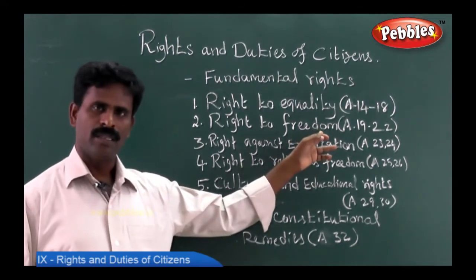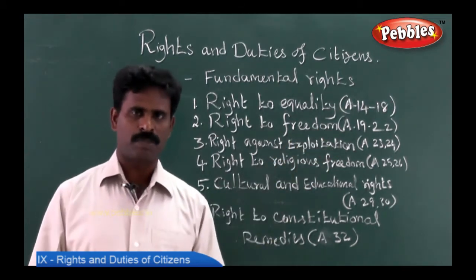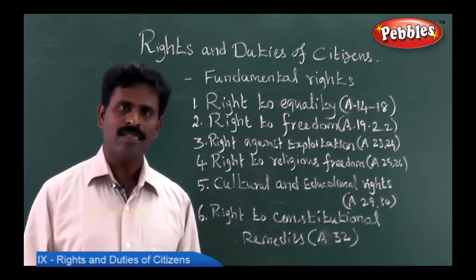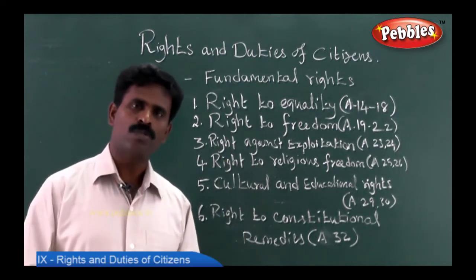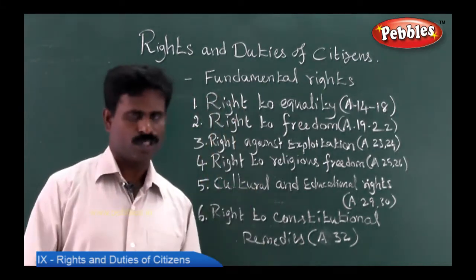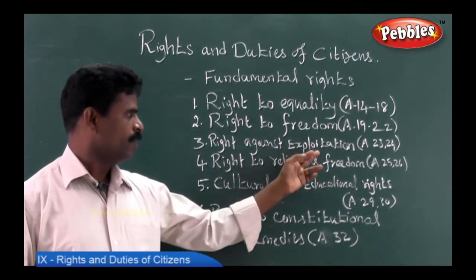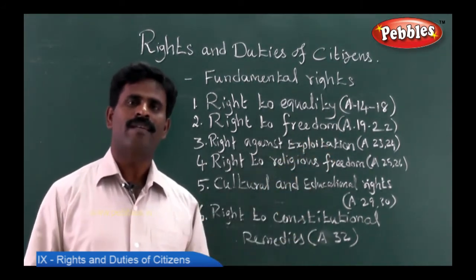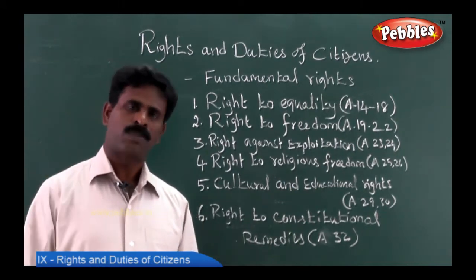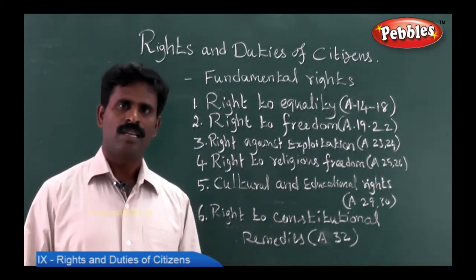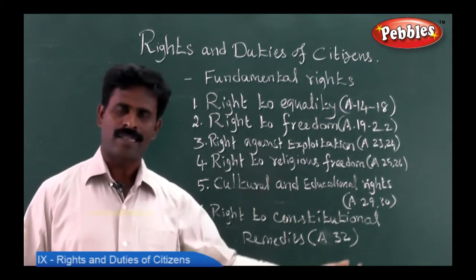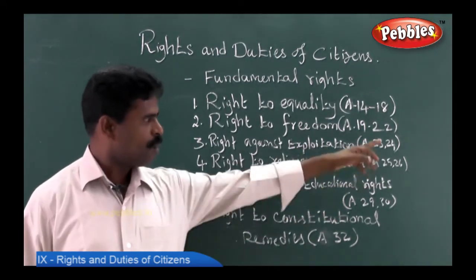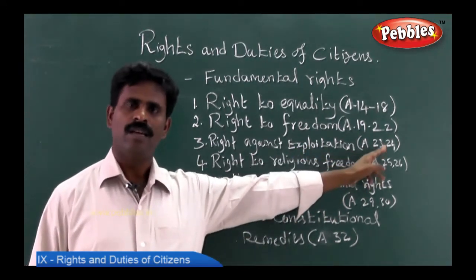Right to freedom refers to the freedom of speech, freedom of expression, freedom to own land, freedom to buy lands, and freedom to be as a person wants to be under the framework of the constitution. Right against exploitation: nobody is a slave in a democratic country. If a person exploits a citizen, the citizen has the right to file a case against their exploiter, which is called right against exploitation, found in Article 23 and 24.